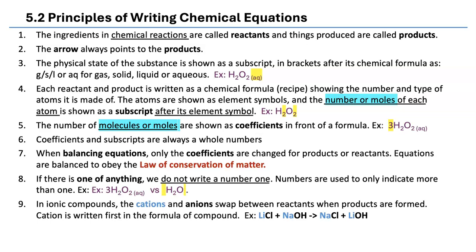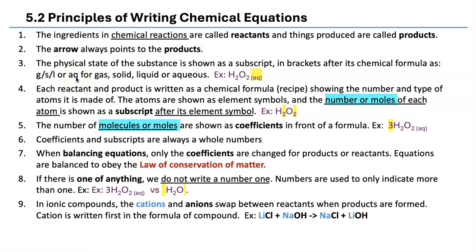There are nine things to remember. Number one: ingredients in a chemical reaction are called reactants and the things produced are called products. The arrow always points to the products. We also show the physical state of the reactants and products using subscripts in brackets: G for gas, S for solid, L for liquid (only used for water), and AQ for aqueous, meaning dissolved in water.